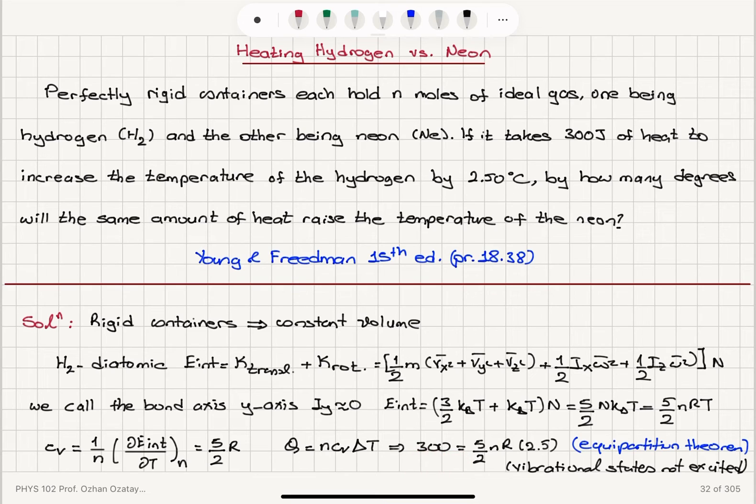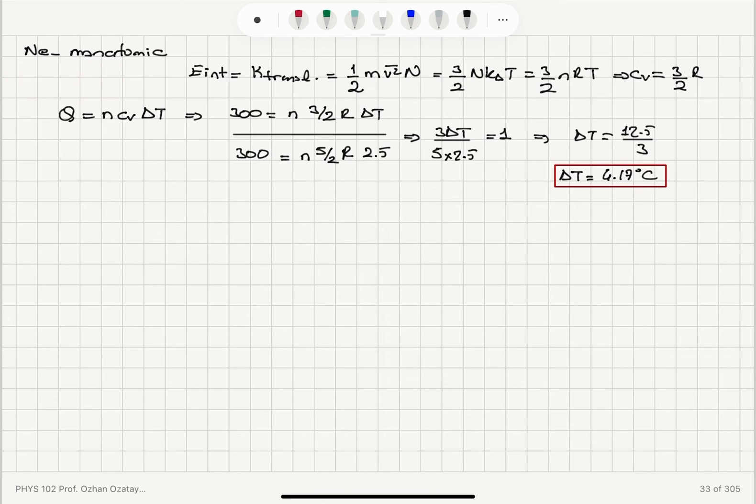So 300 joules provided, 5/2 nR, 2.5 degrees Celsius increase. And vibrational states are not excited, because we're not talking about a very high temperature. For the monatomic gas, neon, we have only translational states providing us 3/2 nRT, and a Cv of molar specific heat at constant volume 3/2 R, constant pressure would be 5/2 R. So 300 is n times 3/2 R delta T for neon.